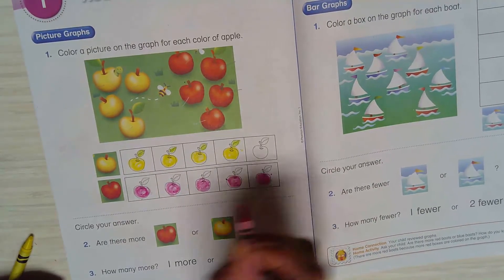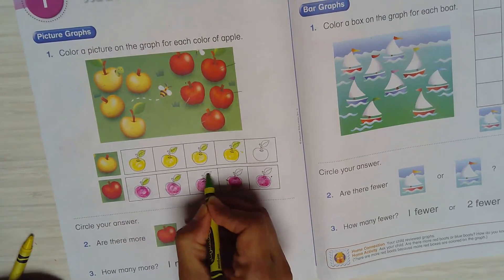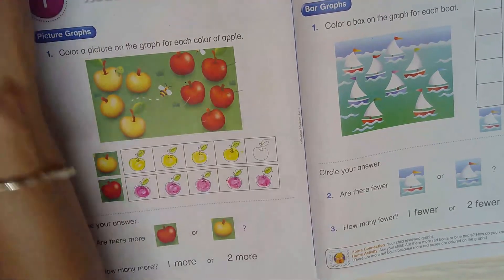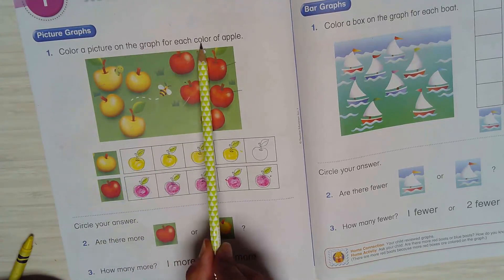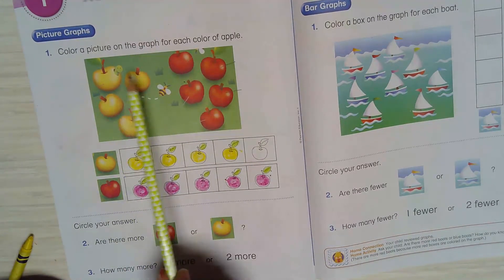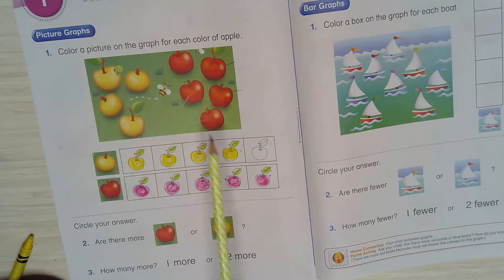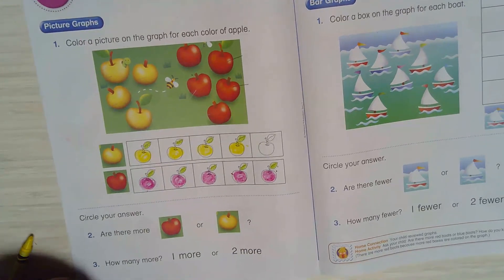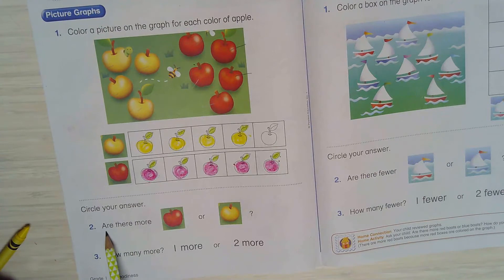Okay, color my leaves green, make my picture more colorful. So this is my first question: color picture on the graph for each color of apple. You count any color - you had four yellow, I color four yellow. I had five red apples, I color five red apples. Awesome.